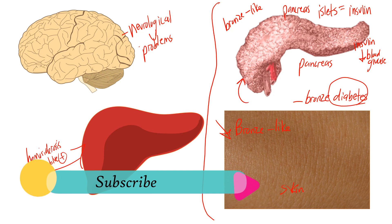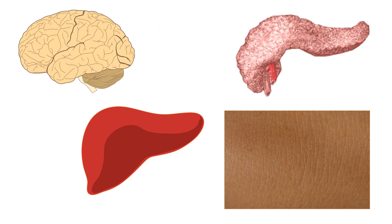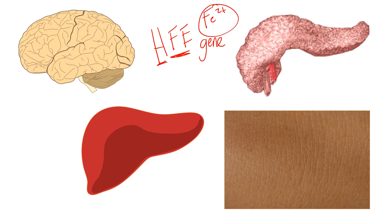To summarize the cause: hemochromatosis is caused by an HFE gene mutation. If you break down 'HFE,' H stands for hereditary and FE is the chemical symbol for iron (Fe2+). So the gene name itself tells you this is a hereditary problem with iron — hereditary iron overload — which is exactly the definition of hemochromatosis.